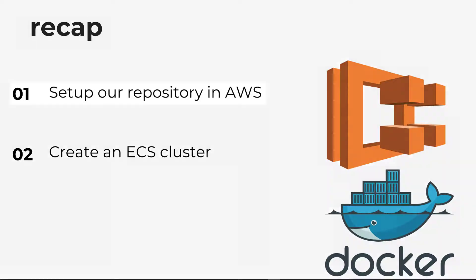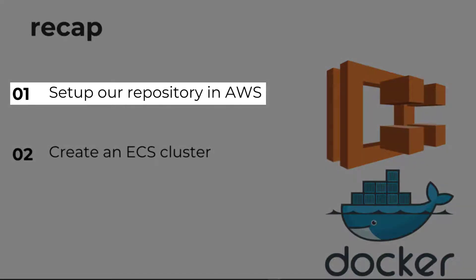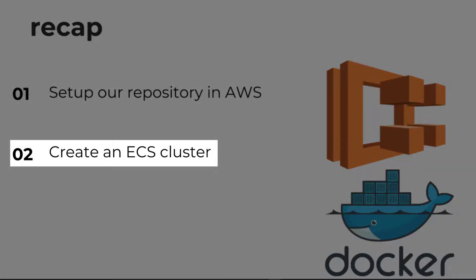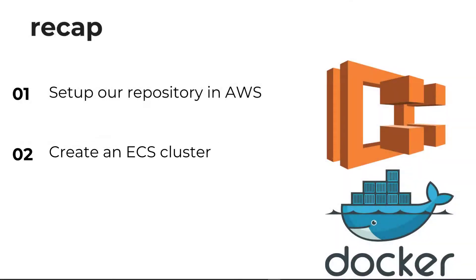To quickly recap: we set up our repository in AWS, which will allow us to store our built Docker images. We then set up our cluster using the EC2 Linux plus networking template. Using templates allows us to bypass a lot of the setup, but it does come with a warning — you don't really know what is being set up behind the scenes. So if you have the opportunity to set the cluster up without using a template, I'd say go for it. The template is basically creating the cluster, VPC endpoints, subnets, and an auto scaling group with Linux AMI. It's doing a lot behind the scenes, and it's worth knowing what is going on when you create these yourself.